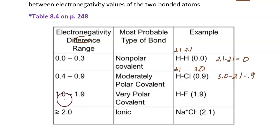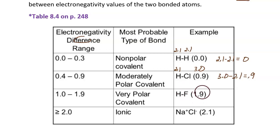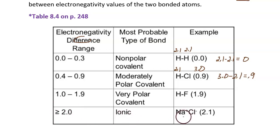The next range is 1.0 to 1.9, which is a very polar covalent bond — the electrons are pulled even tighter to one of the atoms, making that end even more negative and the other end even more positive. An example is HF; when you subtract the electronegativity values, the difference is 1.9. If the difference is greater than or equal to 2.0, that's an ionic bond — for example, sodium chloride. Knowing the type of bond is important because it influences the properties of the compound and the reactions it will have.